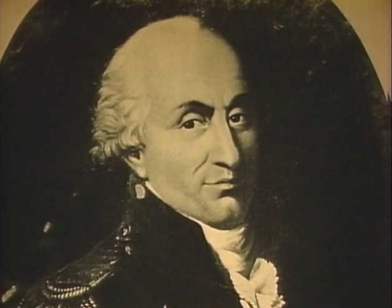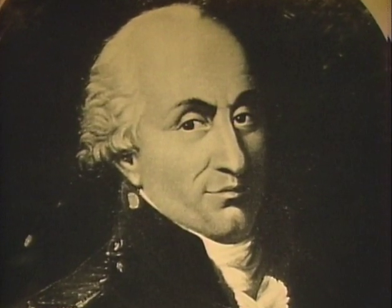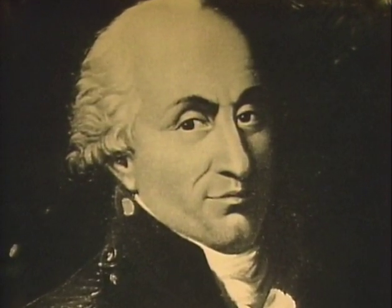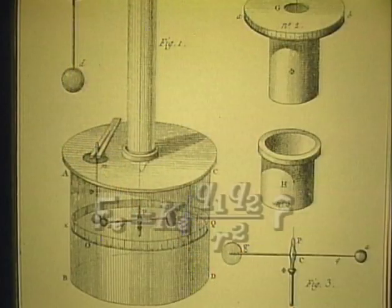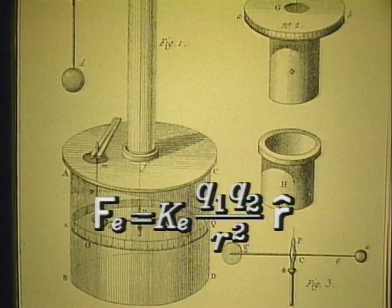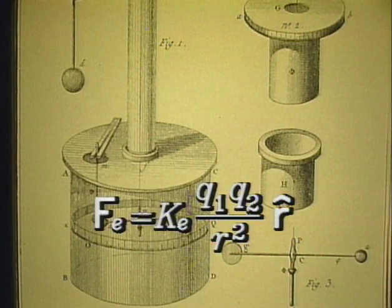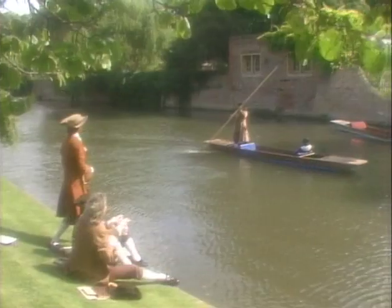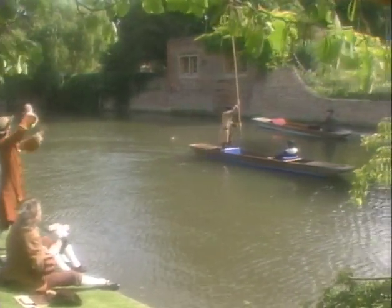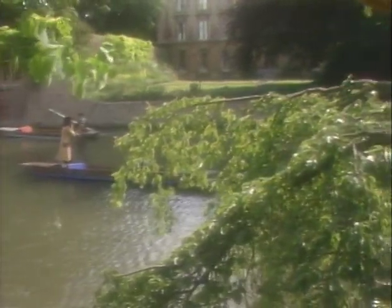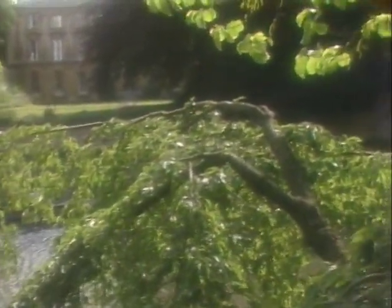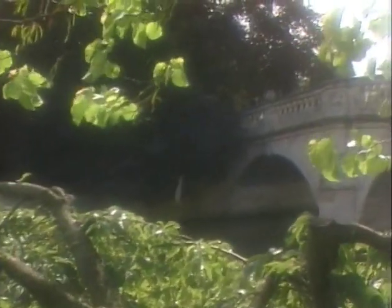In 1789, Charles Augustine Coulomb confirmed what the scientific community had suspected for years. Coulomb finally demonstrated that the electric force F is inversely proportional to the square of the distance R between the charges Q1 and Q2. As elegant as Coulomb's experiment was, the concept — the idea of the inverse square relation — had been a major scientific notion for some time.